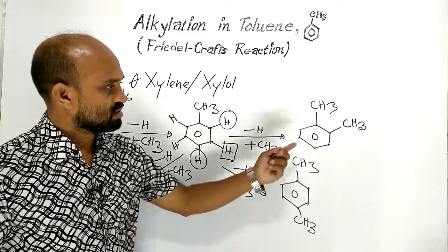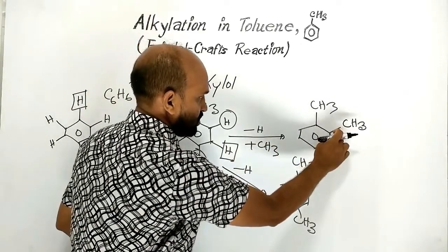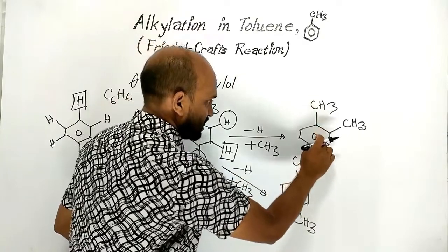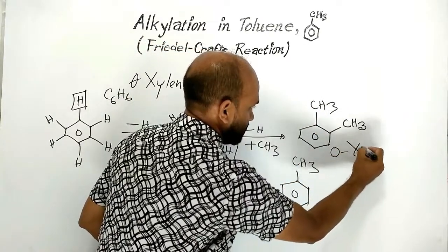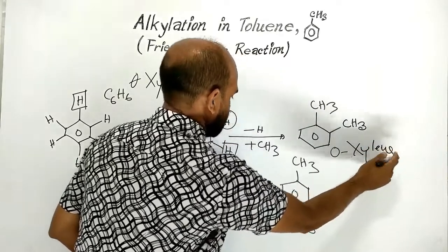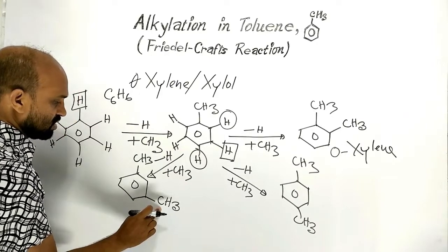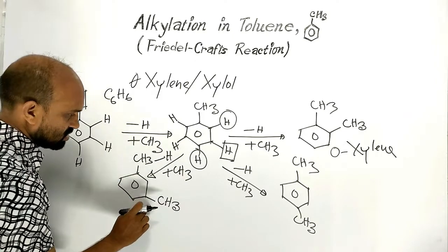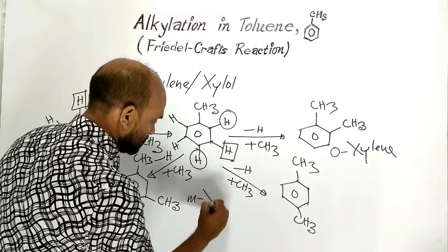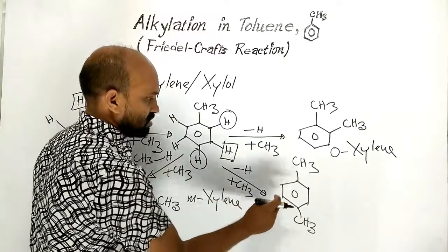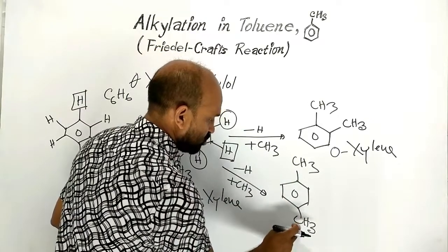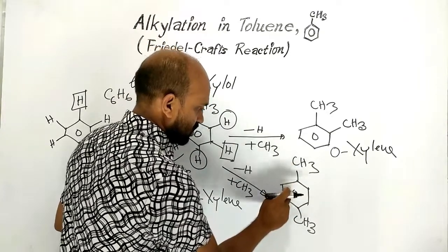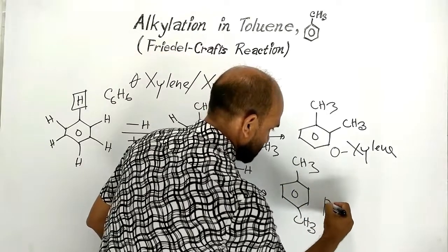When the first methyl group is at the ortho position with respect to the second methyl group, that xylene is named ortho-xylene. When one methyl group is at the meta position with respect to the other methyl group, its name is meta-xylene. When one methyl group is at the para position, that xylene is named para-xylene.